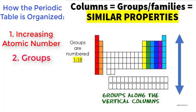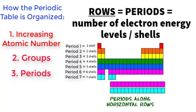These are the vertical columns and each element in a group has similar properties. A third way the periodic table is organized is by periods. Periods are the horizontal rows and each element in a period has the same number of electron shells.